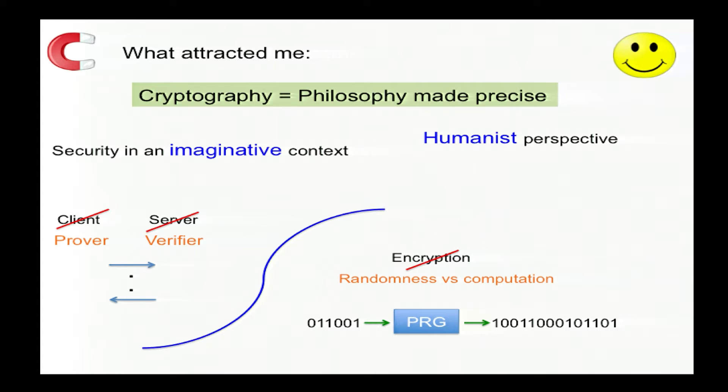Interactive proofs here were not about clients and servers, but about people convincing one another. Pseudorandom generators were not about encryption, but about the relation between randomness and computation. The context for cryptography in this culture wasn't the rest of computer science. Rather, it was all that was best and most creative in the broad intellectual tradition of humanity. Cryptography rubbed shoulders with art and music and literature, not, heaven forbid, with systems.